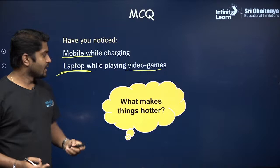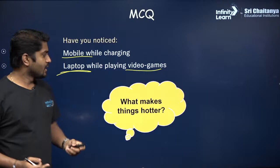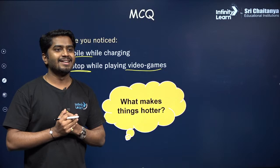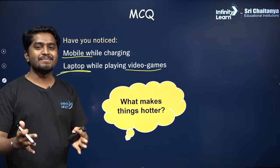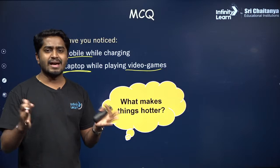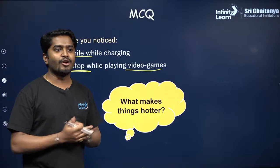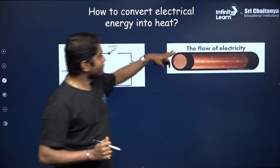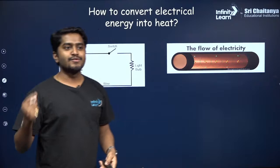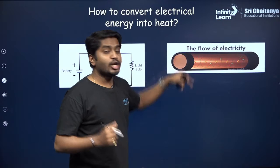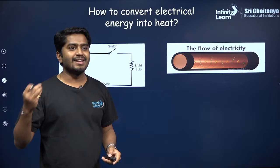Why do things become very hot? When electrons flow and move through a conductor, they collide with other atoms and other electrons.